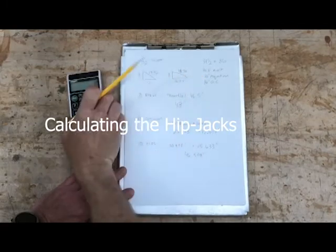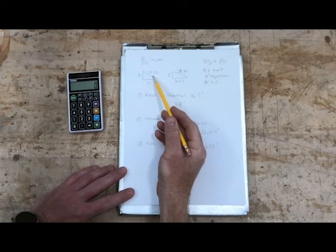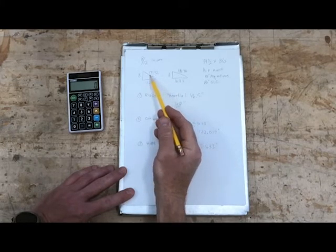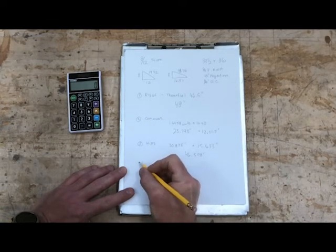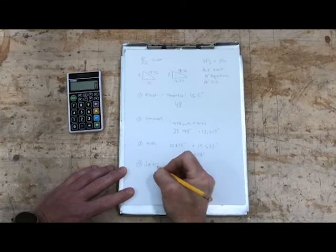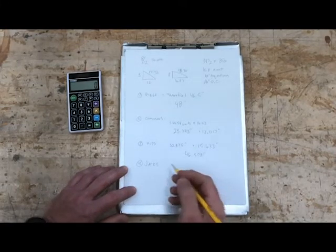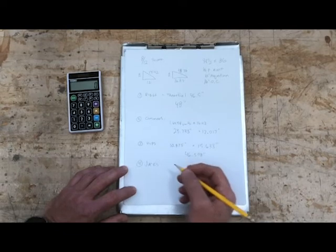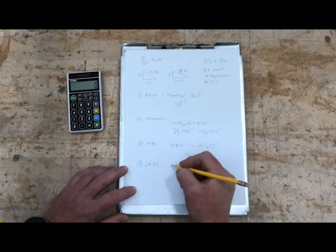Last step here, we're going to do our jack calculations. Jacks are on the same slope and the same angle. They run square to the building line just like a common does. So we're going to use the same unit run for them. These are our hip jacks, of course, because there's no valleys on this.